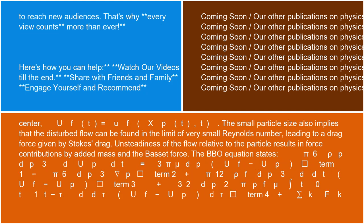u_f(t) = u_f(x_p(t), t). The small particle size also implies that the disturbed flow can be found in the limit of very small Reynolds number, leading to a drag force given by Stokes' drag.